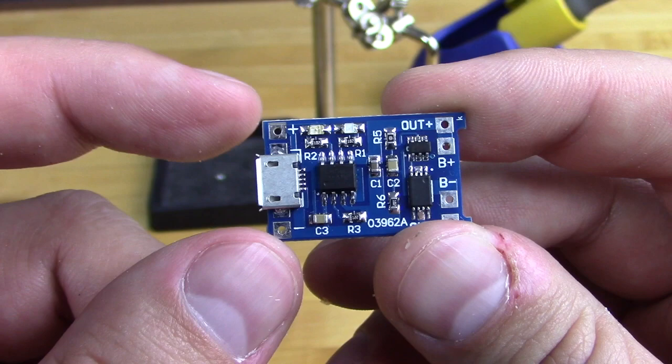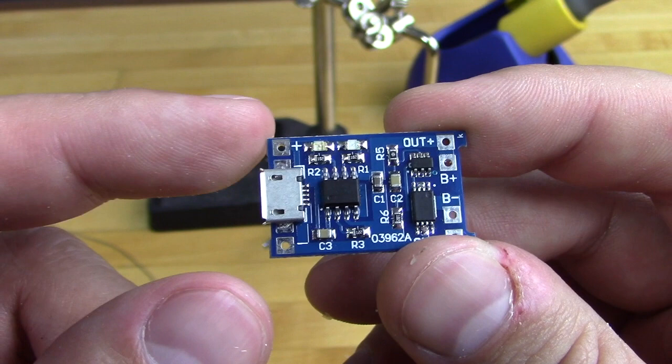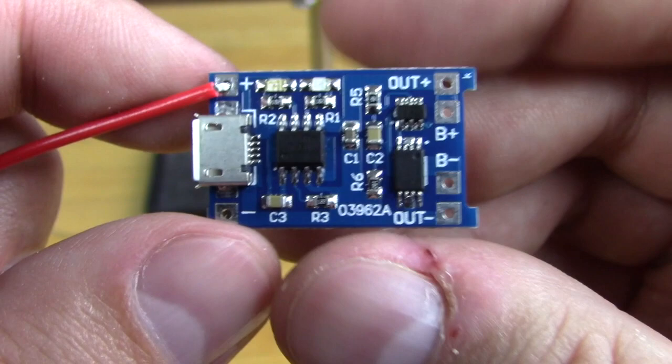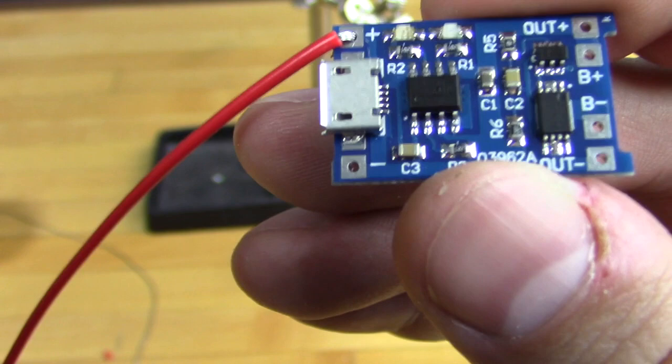The lithium charge controller board is the most important part in this entire project because everything hooks up to this board. The positive and negative hole on the left of the board, next to the USB port, are where our solar panel wires connect. Take one of the wires and run it through each of the holes, positive for red, negative for black, and we'll be soldering those into place.